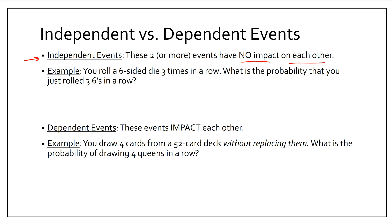Here's your example: you roll a six-sided die three times in a row. You roll, you get a number. You roll again, you get a number. You roll again, you get a number. What is the probability that you rolled three sixes in a row? Let's say you roll a six — does that impact what you're going to roll next time? Are you more likely or less likely to roll another six? No, that's ridiculous. The die resets each time, so the probability of the first roll is not impacted by the probability of the second roll, which is not impacted by the probability of the third roll. These are all totally independent events.